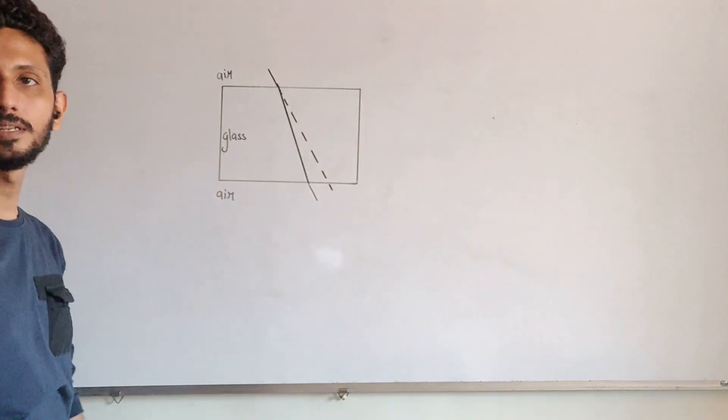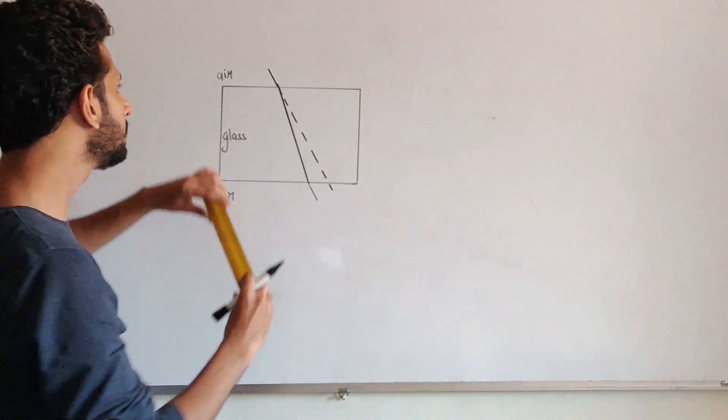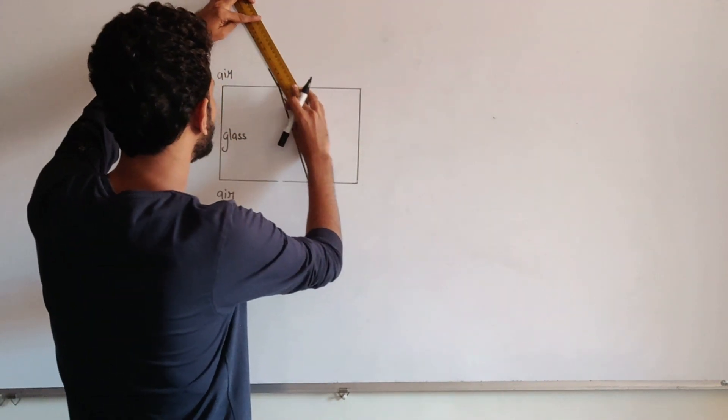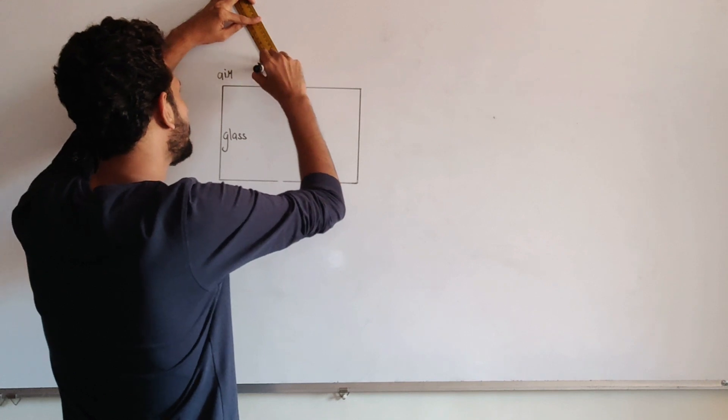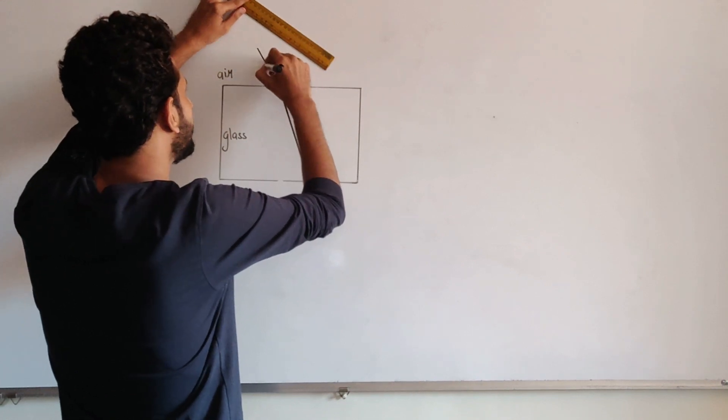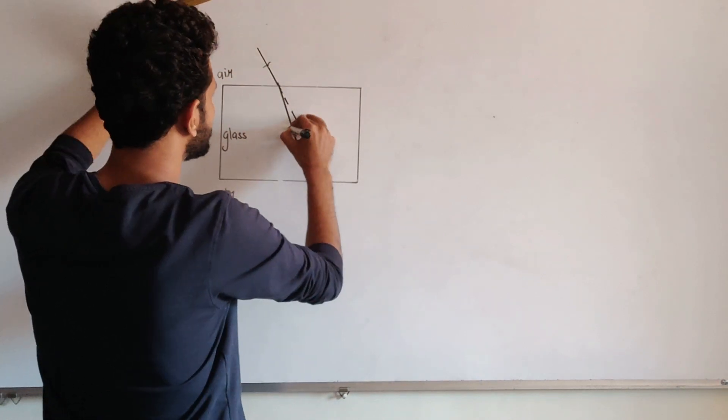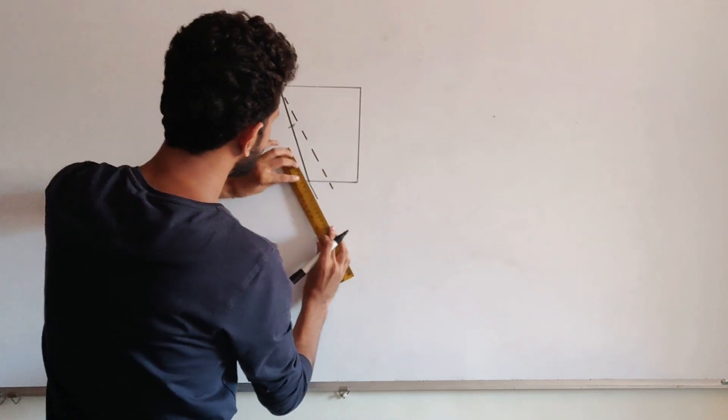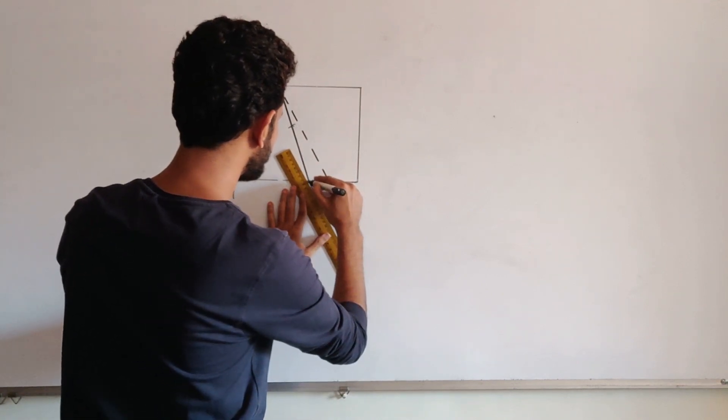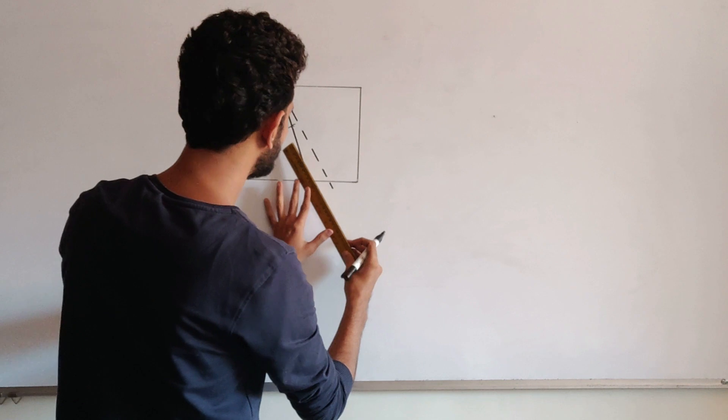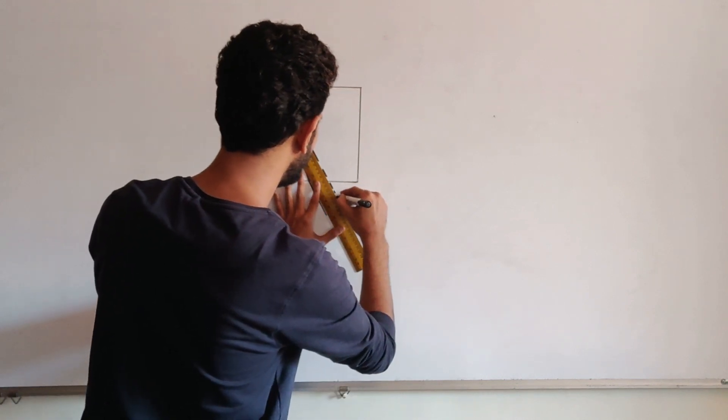The refraction is seen very clearly over here, make the rays drawn over here properly now, show them a bit long for a clarity on both the sides. Also extend the original direction so that we get a clarity over here.